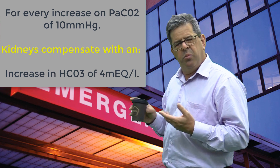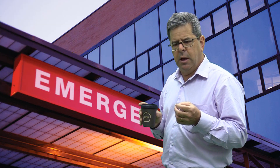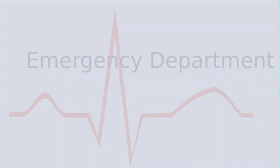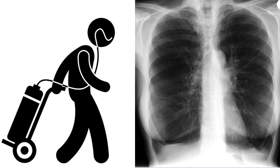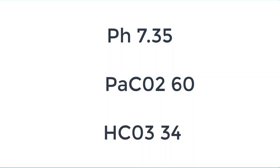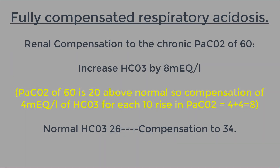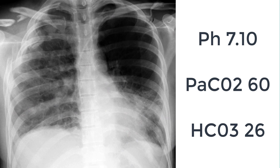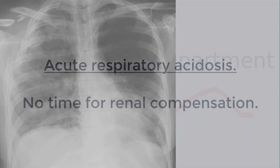Let's look at examples of respiratory acidosis. First, a patient with severe COPD and longstanding shortness of breath: pH 7.35 (just at the edge of normal), CO2 elevated at 60, bicarbonate elevated at 34 — this is fully compensated respiratory acidosis. In contrast, a 34-year-old with an acute flail segment: pH 7.1, CO2 60, but the bicarbonate hasn't moved — there's been no time for compensation. This is acute, uncompensated respiratory acidosis.